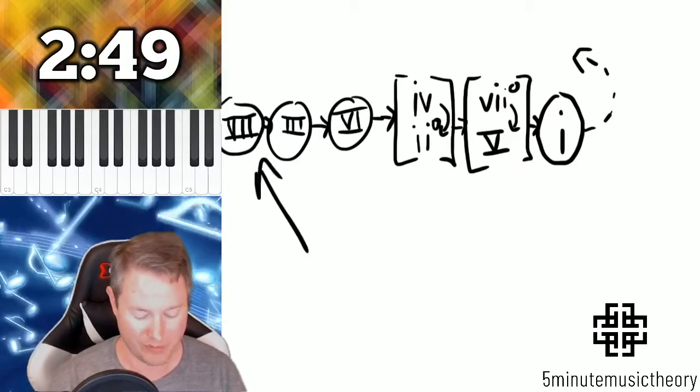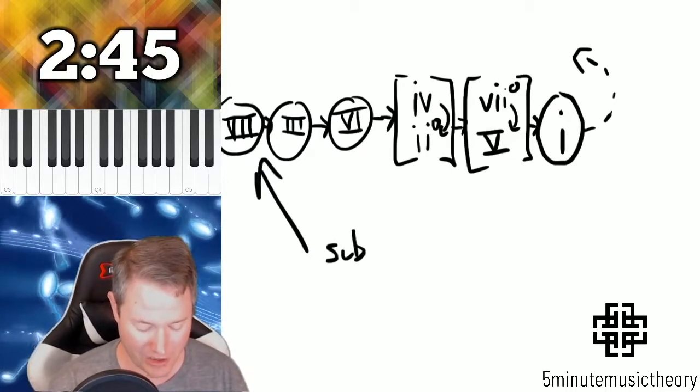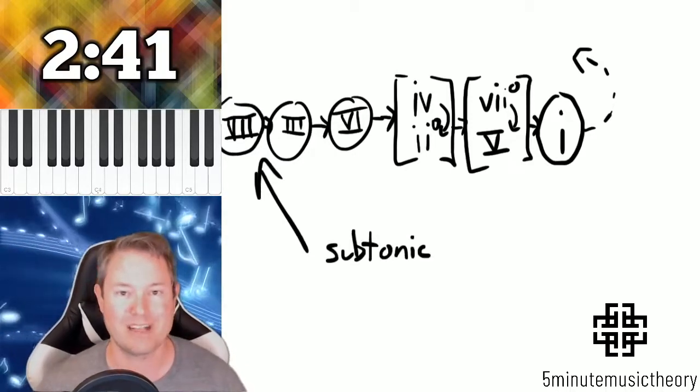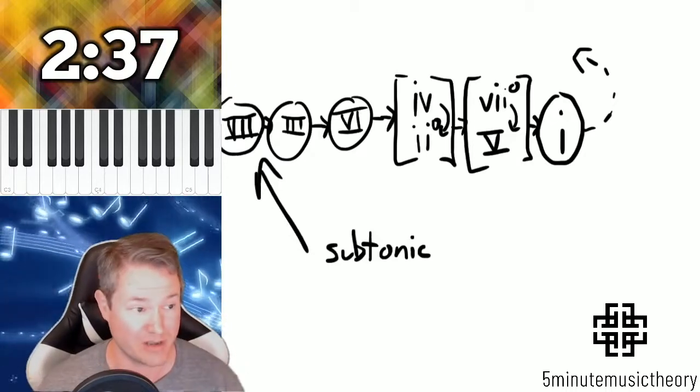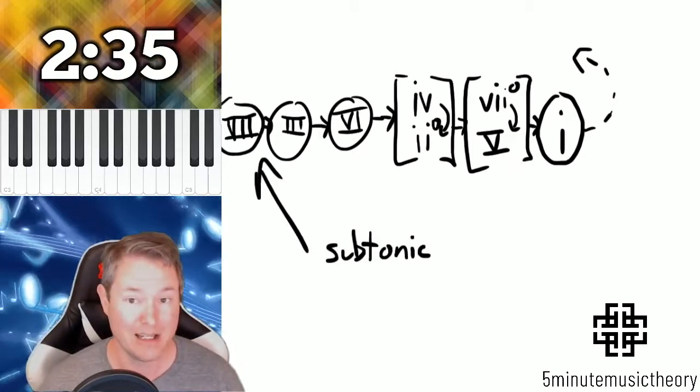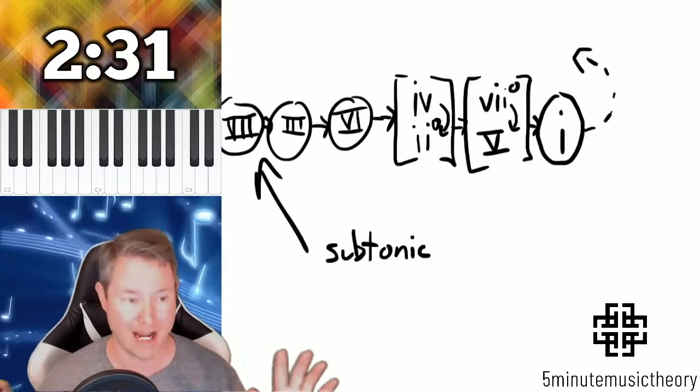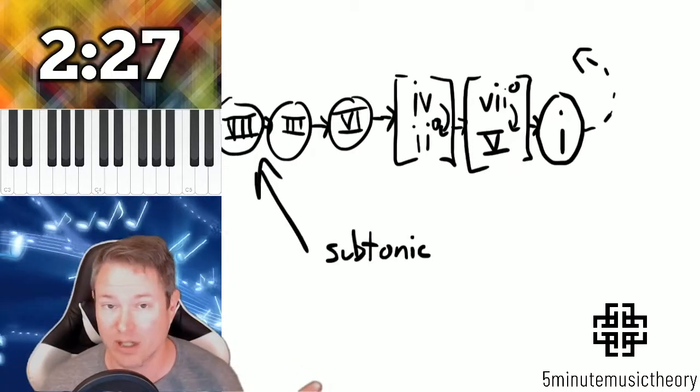This chord is built from the natural seventh scale degree, and it's a major triad and it's called subtonic. Now notice that subtonic and leading tone are about as far apart from each other as they could possibly be. Functionally, they perform two absolutely different functions. In no way is a subtonic a leading tone chord.